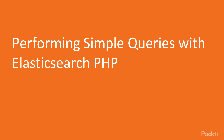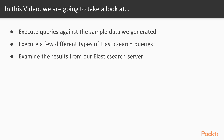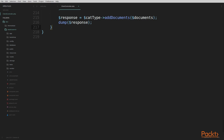In this video we'll take a look at executing some queries against the sample data we generated in the last section. We'll execute a couple of different types of Elasticsearch queries using the Elasticsearch PHP client and examine the results we get back from our Elasticsearch server. Just like in the last section, we're going to be doing most of our work in the web.php routes file and the client controller file that we created.